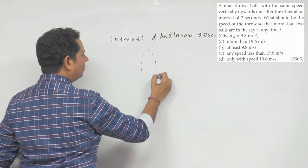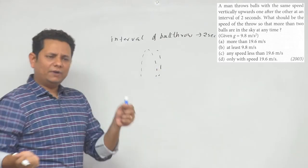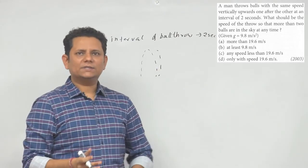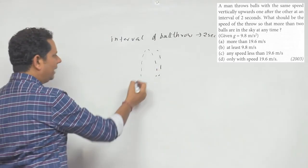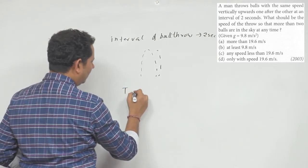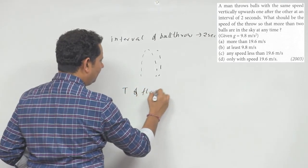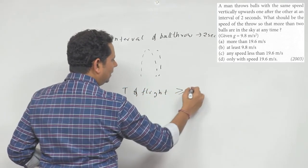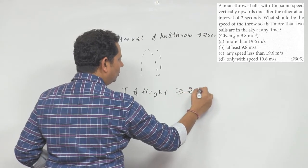So you want that when one ball goes up and comes back down, after that you've thrown the second ball, and when you're ready to throw the third ball, the first ball is coming back down. This means the first ball's time of flight should be greater than or equal to 2 times 2 seconds.